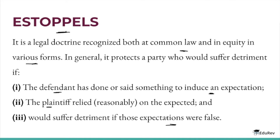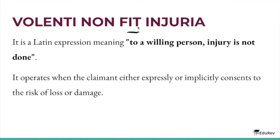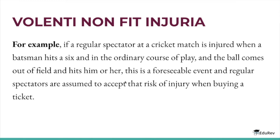Next comes volenti non fit injuria. It's a Latin expression meaning 'to a willing person, injury is not done.' It operates when the claimant either expressly or implicitly consents to the risk of loss or damage. For this, the consent must be free, the consent may be expressed or implied, and the act must be lawful. For example, if a regular spectator at a cricket match is injured when a batsman hits a six in the ordinary course of play and the ball comes out of the field and hits him or her, this is a foreseeable event and regular spectators are assumed to accept that risk of injury when buying a ticket.